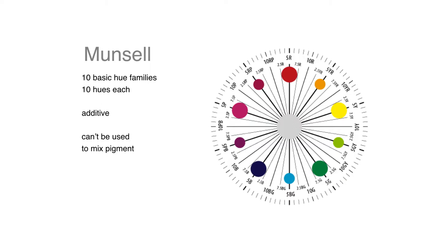So the way Munsell breaks down is that there are 10 basic hue families, and each hue family has 10 hues. So we already have 100 colors that we're dealing with. I've said here that it can't really be used to mix pigment in the same way that Itten's can, although there are certain artists who do follow Munsell in terms of mixing pigment.